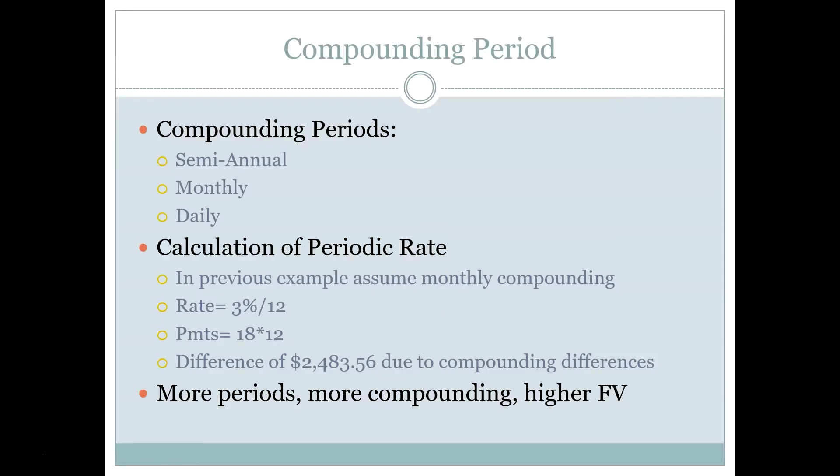In the last example we talked a lot about compounding period and how important it is. This isn't the first time — we covered compound and simple interest back in Chapter 5 — but I want to reinforce just how important compounding period is and discuss the most common compounding periods we'll see in practice and in this class. Certainly the most common is annual, meaning interest is compounded once a year. But monthly is probably the most common in personal finance.